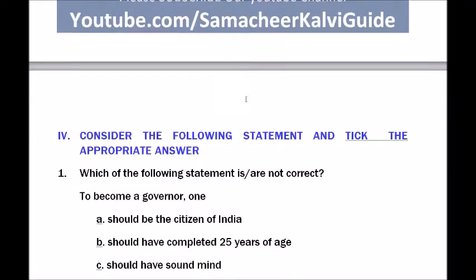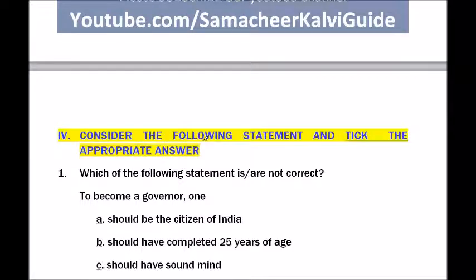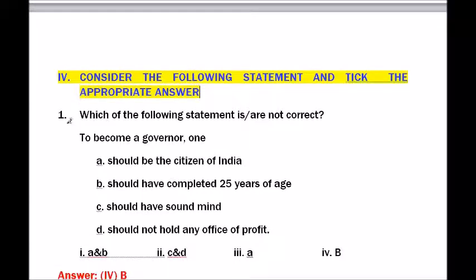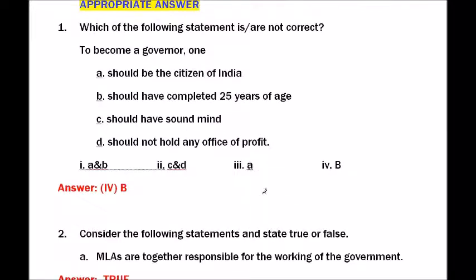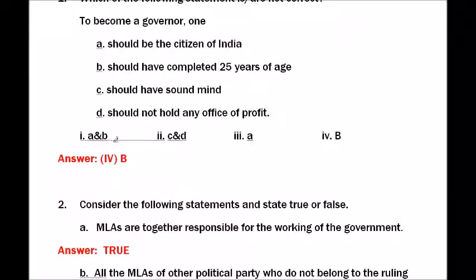Section four: Consider the following statements. Question one — which of the following statements is or are not correct to become governor? Options: one — A and B, two — C and D, three — A, four — B. The answer is B — should have completed 25 years of age.